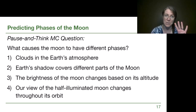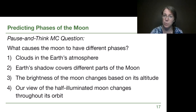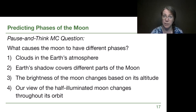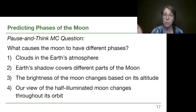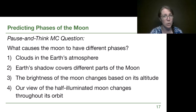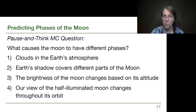The answer is still option 4: our view of the half-illuminated moon. It's half lit up from sunlight, and sometimes we see the whole daytime side of the moon and we call it a full moon. Sometimes we only see part of it, and that changes throughout the moon's orbit.